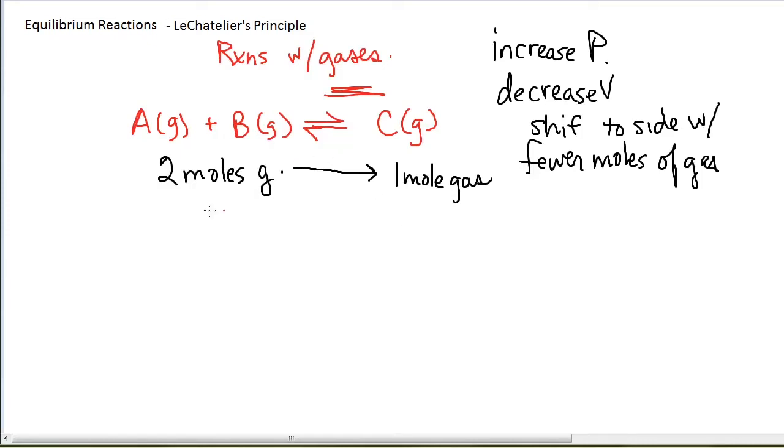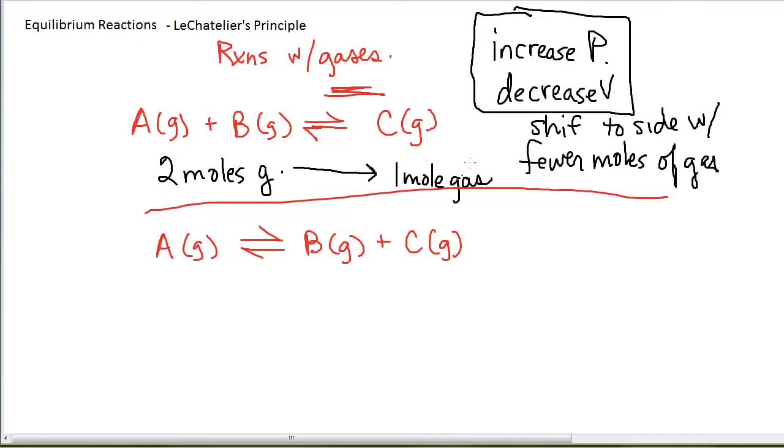If I have a reaction that has more moles of gas on the product side than the reactant side, for example, then the effect of either increasing the pressure or decreasing the volume would have the same effect on this reaction. This reaction would shift to the left.